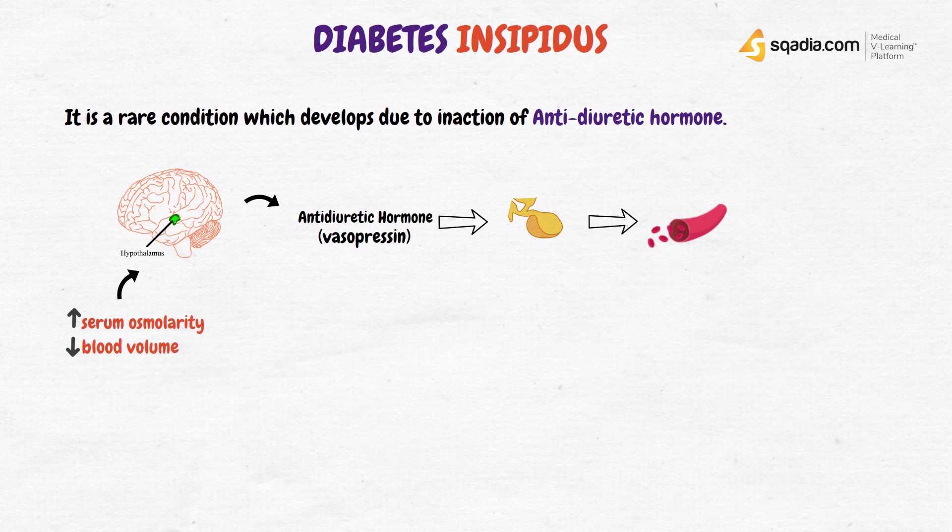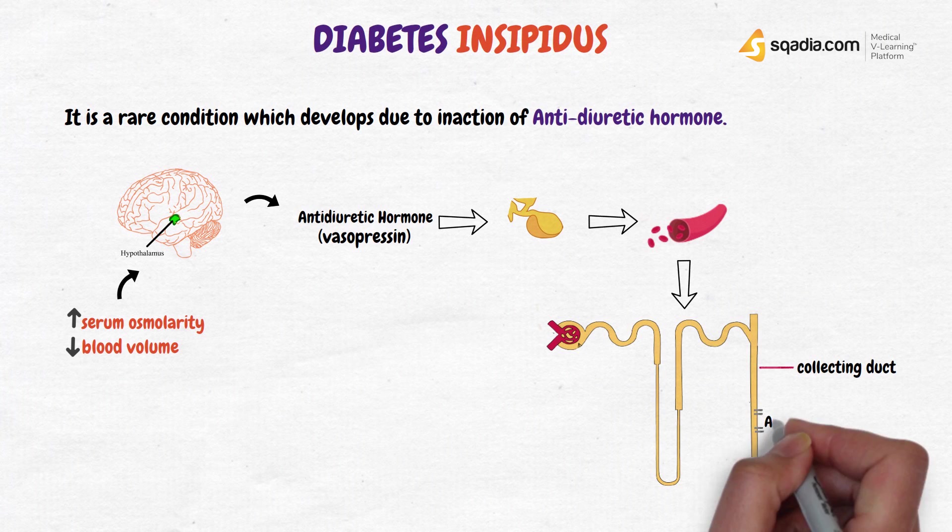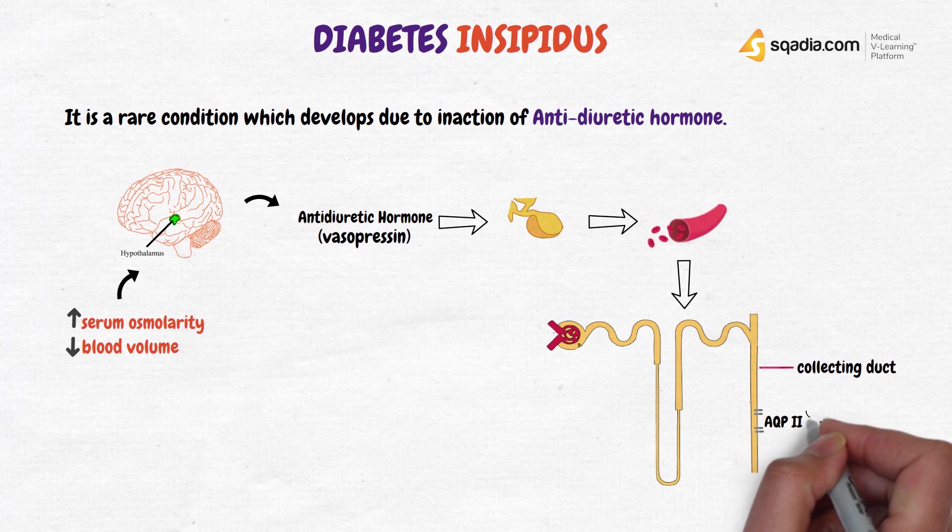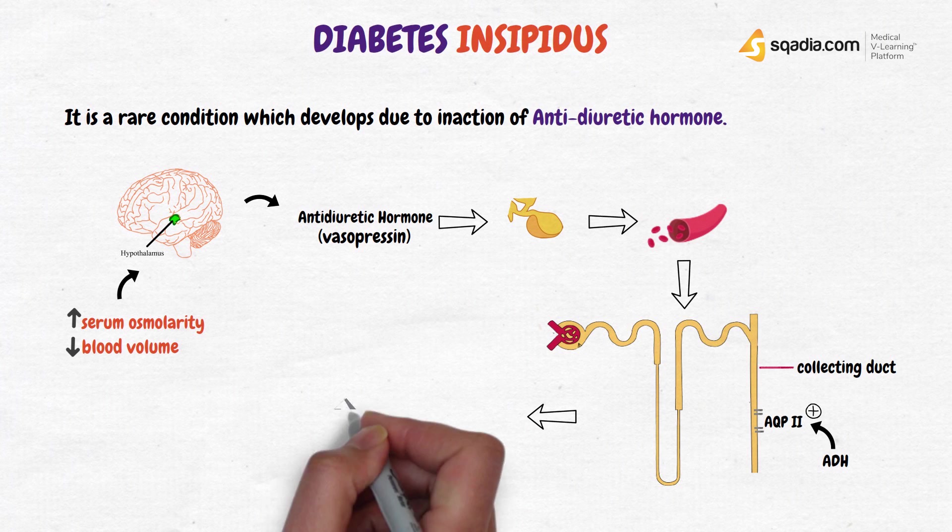ADH reaches the nephrons of the kidney via the bloodstream. Here, it acts on a specific part of the nephron known as the collecting duct. In the collecting duct are aquaporin-2 channels, which reabsorb water. ADH stimulates production of more aquaporin-2 channels, causing more water reabsorption.